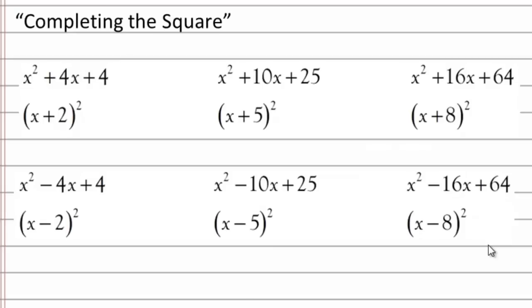So let's start observing some patterns. If we take a look at the b value, 4 here, and I take a look at what the factored value is in the parenthesis, think about what the relationship is between those two numbers, 10 and 5, as well as 16 and 8. If you notice, all of those are half of the b value.